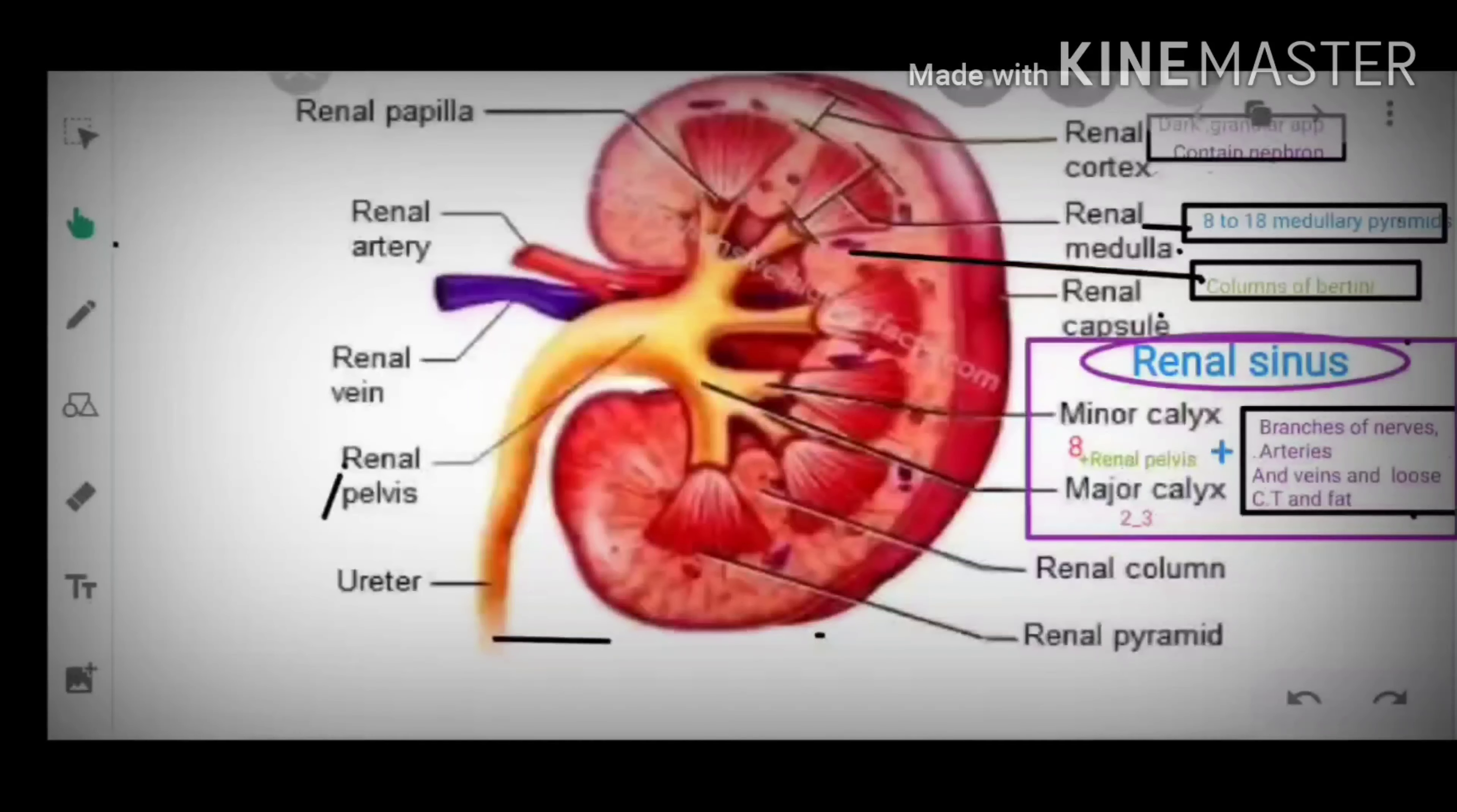Hello everybody, today's our topic is functional anatomy of kidney. Kidney is a compound tubular gland covered with a connective tissue capsule. There are different layers of kidney and the components of kidney are arranged in three layers.